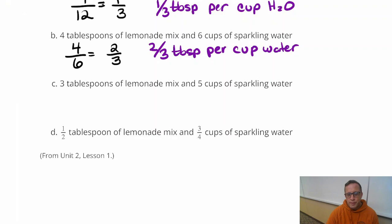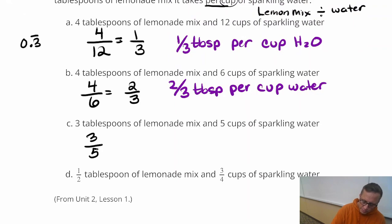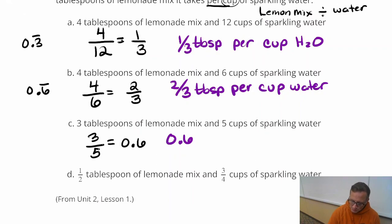Three tablespoons of lemonade mix and five cups of sparkling water. Now if you do use your calculator on this one, this one comes out nice. I just don't like it when you get repeating, putting down a repeating decimal as an answer just doesn't cut it for me. It's not a very elegant way to express your answer, although it isn't wrong. Three-fifths, if you do that, three divided by five, that's 0.6. Now I've never seen anything that measures 0.6 of a tablespoon, but whatever.